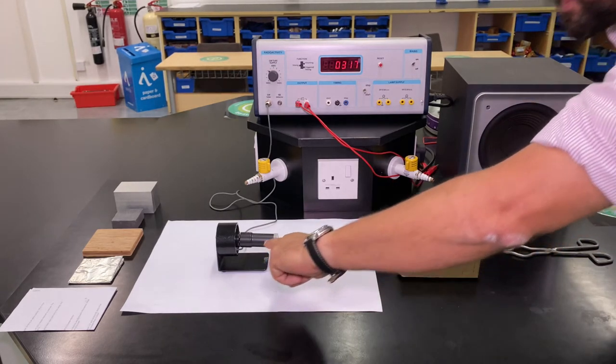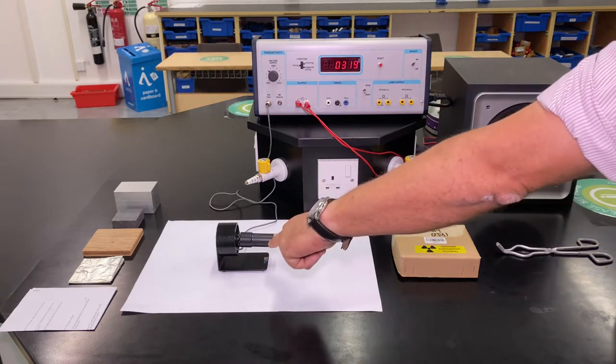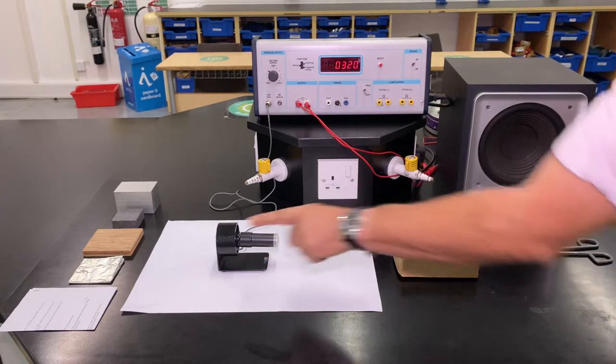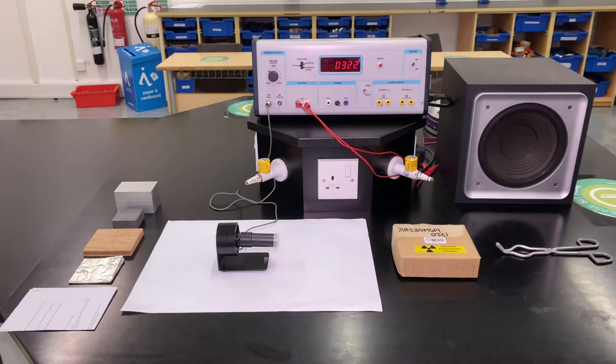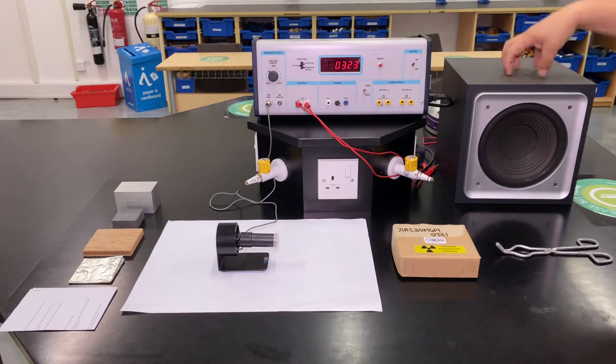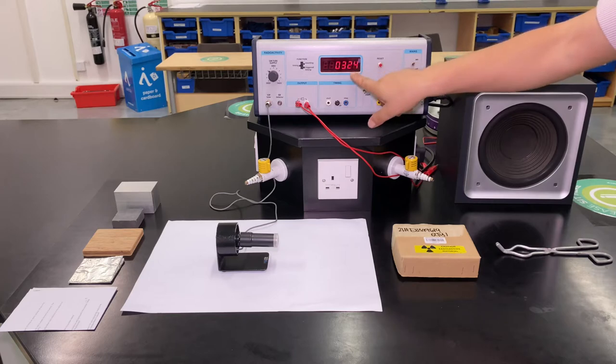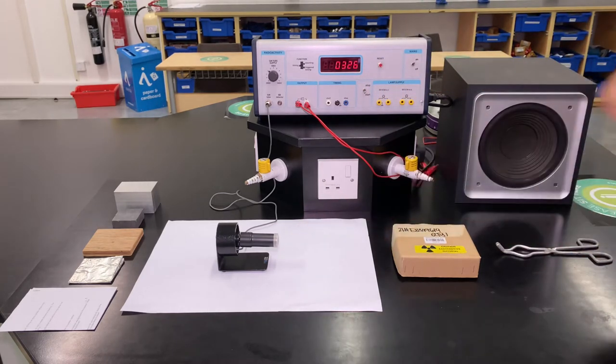The setup we have here: the GM tube detects the individual alpha, beta, and gamma particles. Going into the tube, they create an electrical pulse which is counted with the scalar timer. Connected to the scalar timer, we have a big loud speaker.